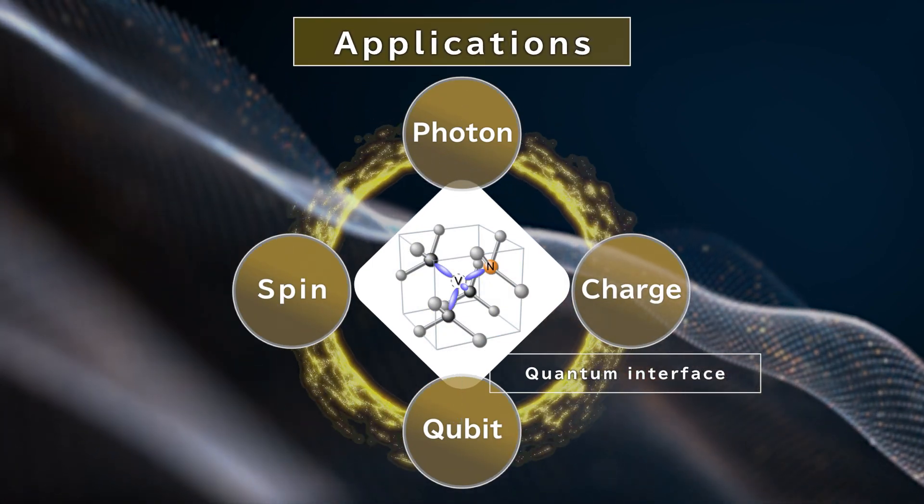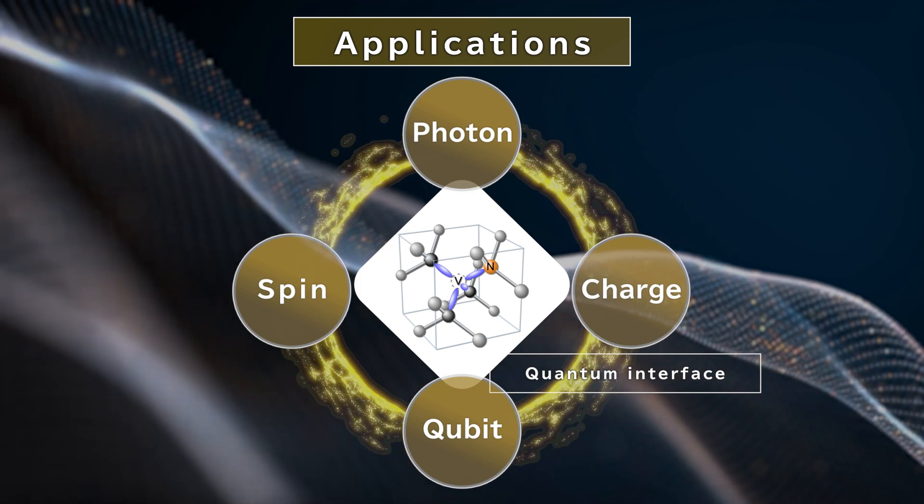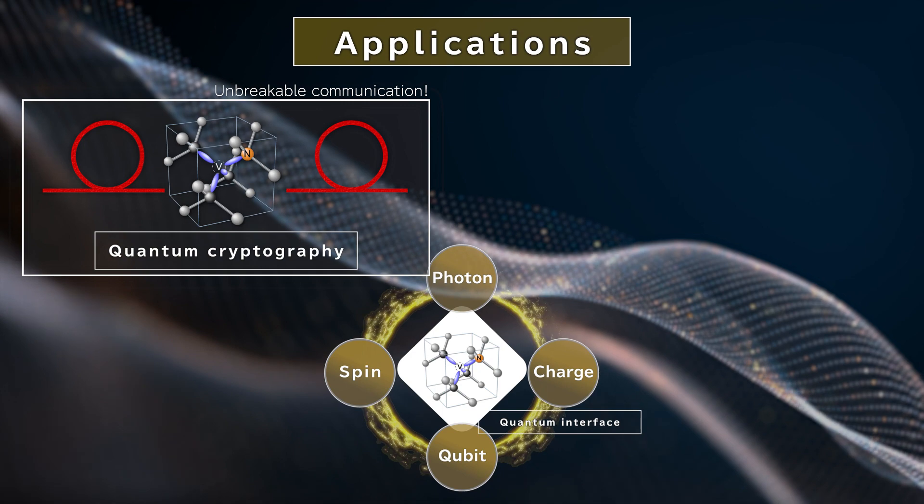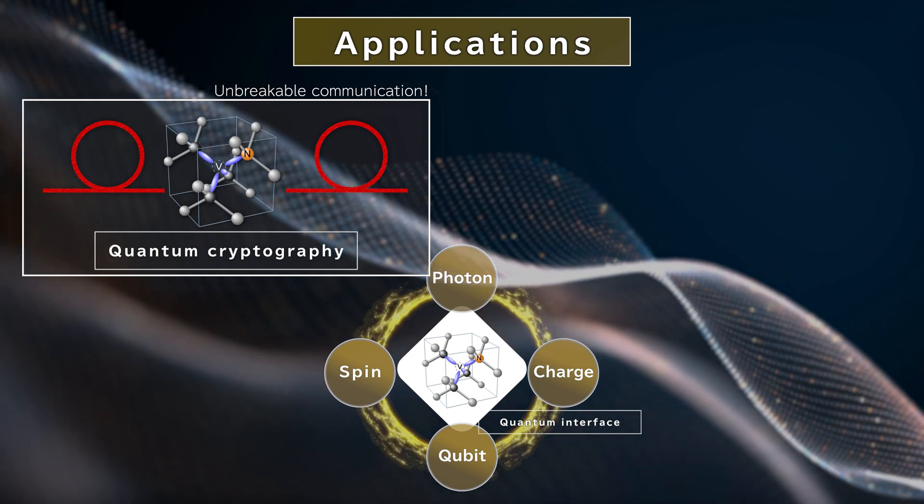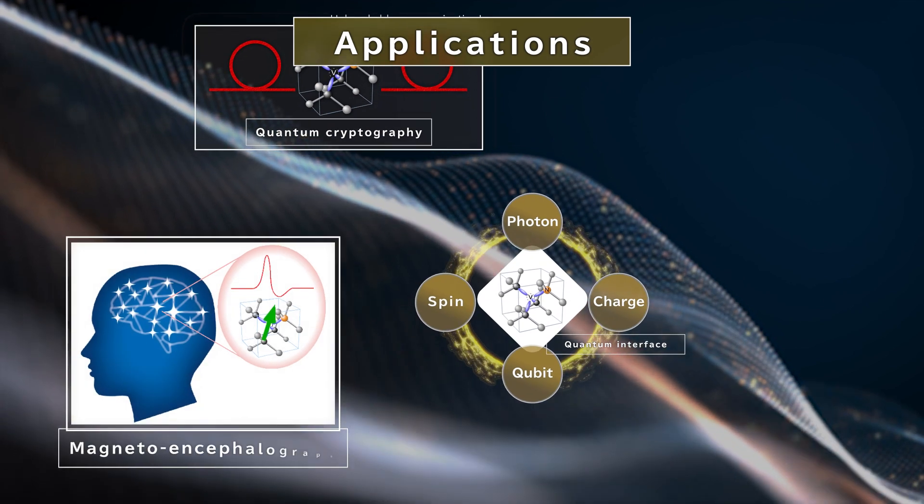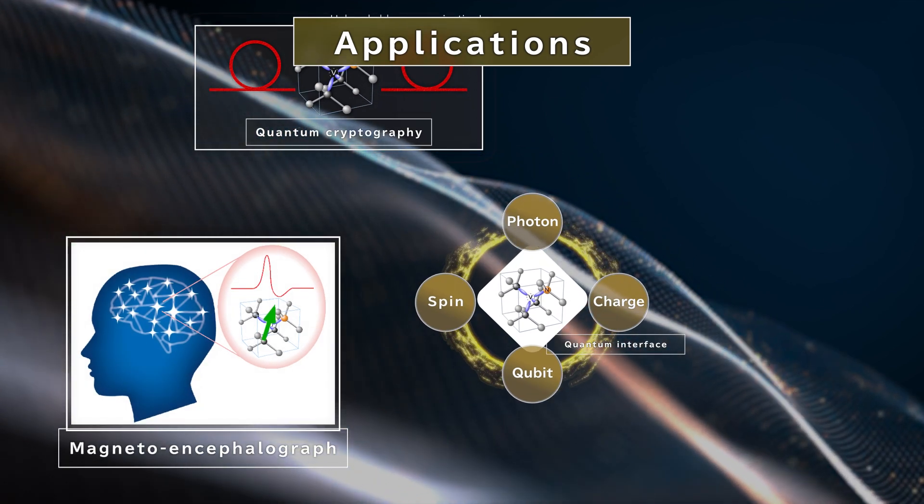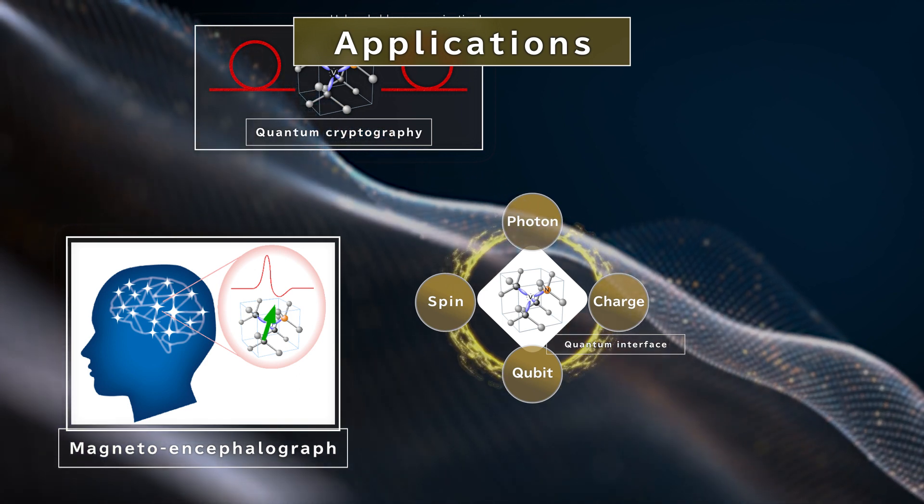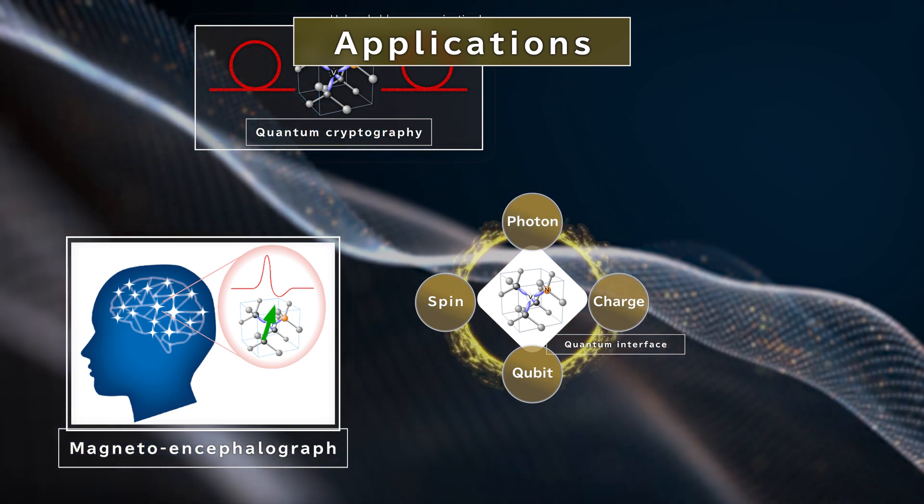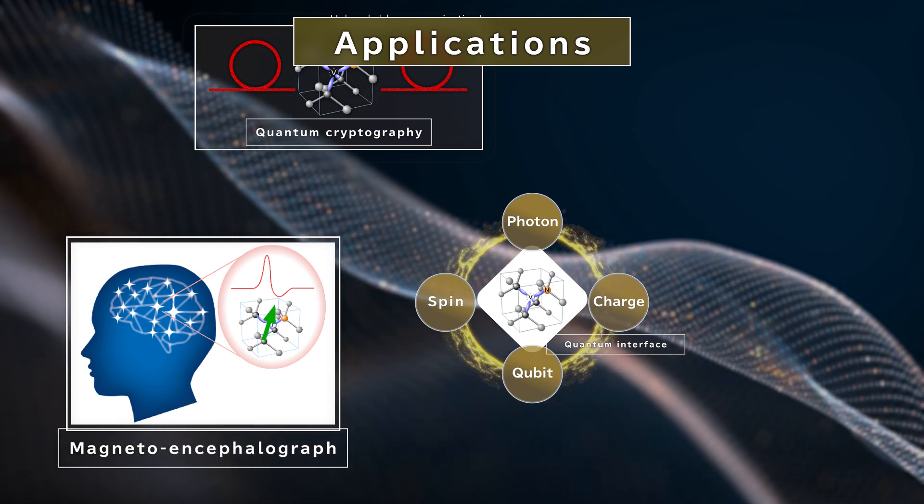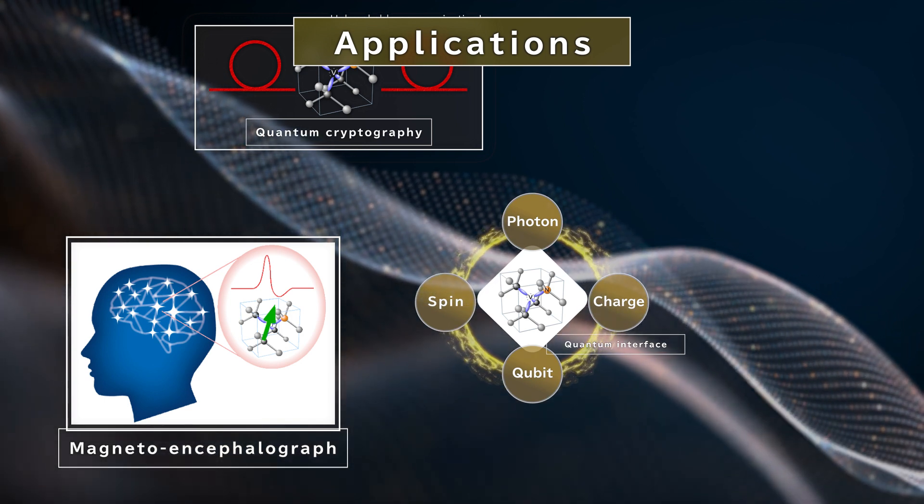By utilizing its excellent properties, many applications in broad fields are anticipated. An example is its application in quantum cryptography, which realizes unbreakable communications. Next, there are highly sensitive sensors which visualize what was previously invisible. For example, it has the potential to detect the magnetic field from the brain, which enables us to explore the unknowns of our neural network.